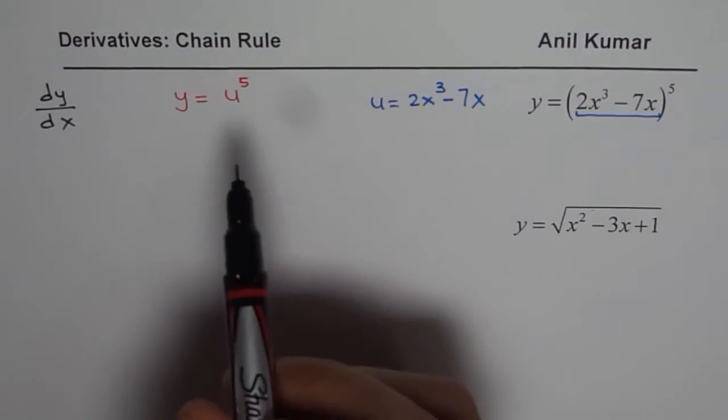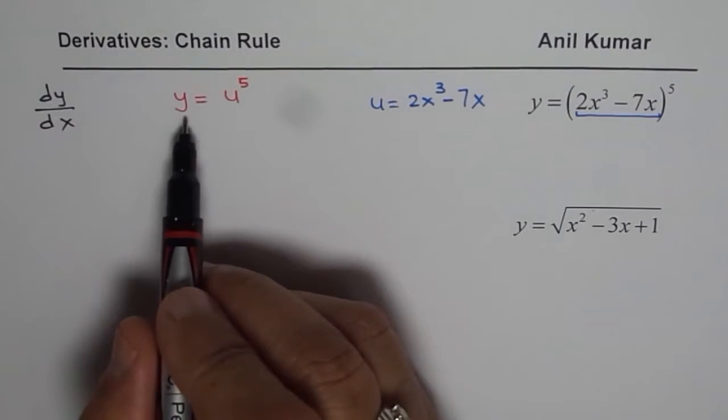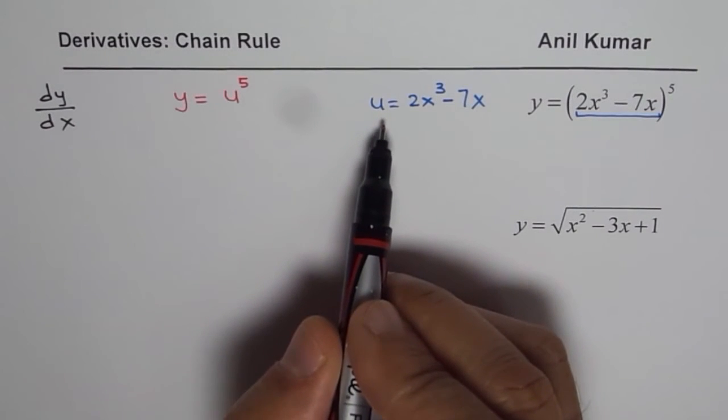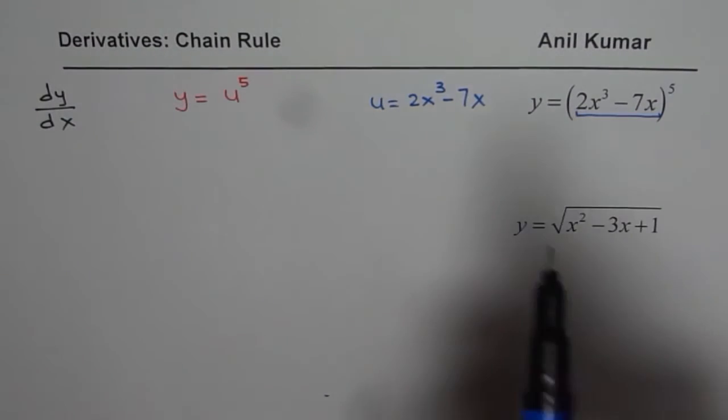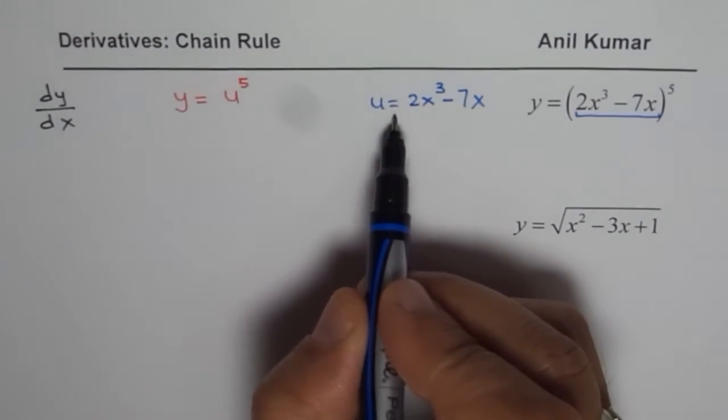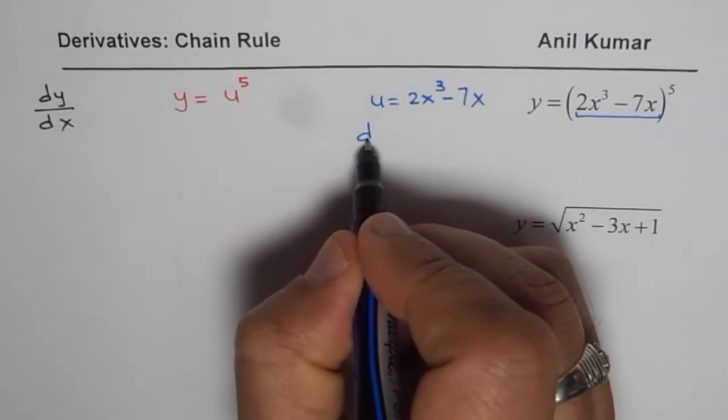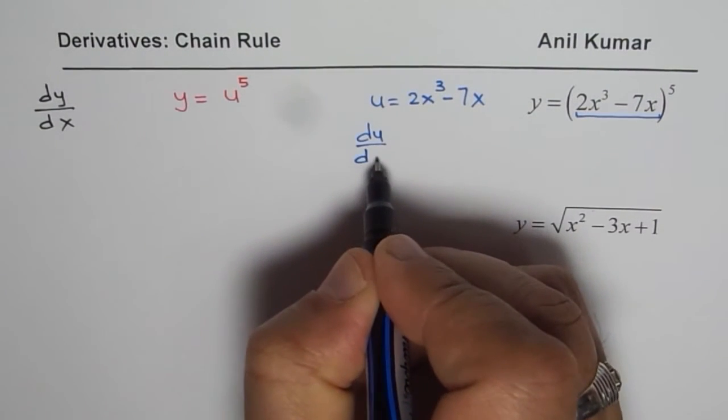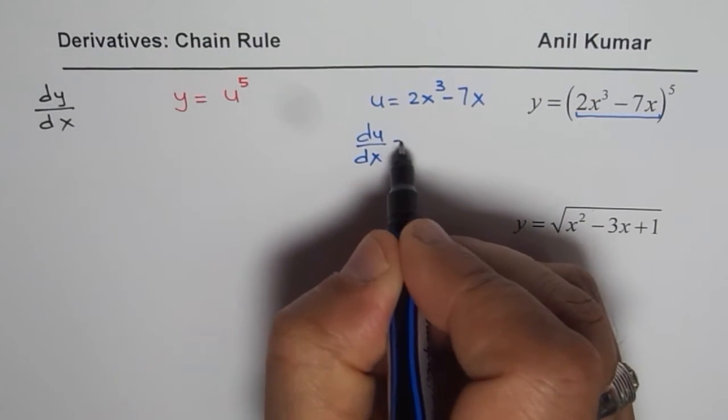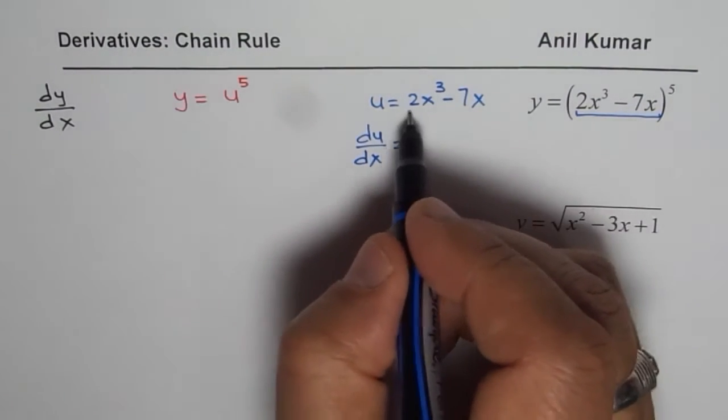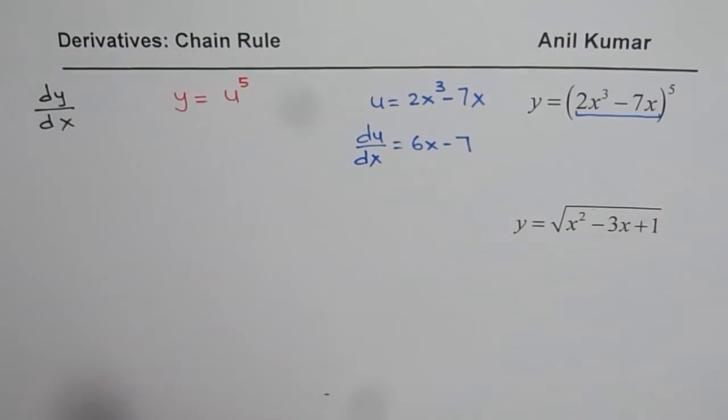What we normally do here is we differentiate each function with respect to their independent variable. u equals to 2x³ - 7x. We can find what du/dx is. The derivative of u with respect to x will be, apply the power rule, 6x - 7, correct?